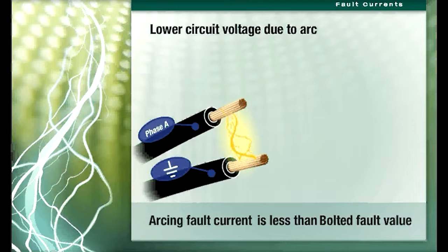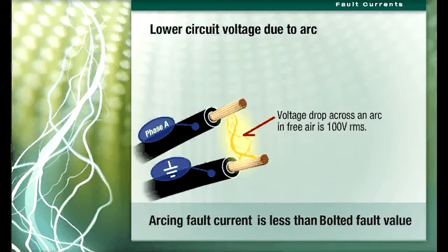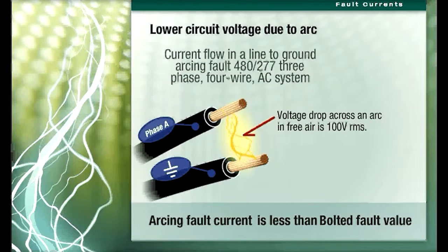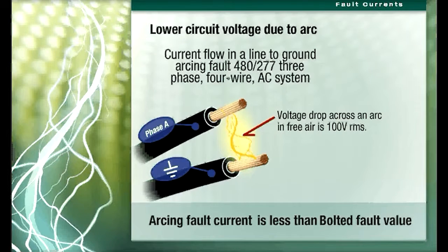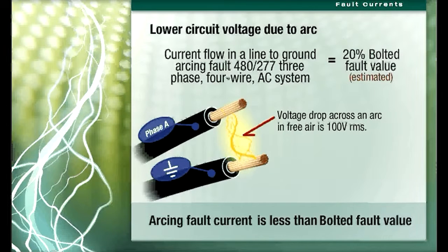The reduction is due to a lower voltage applied to the circuit due to the voltage drop across the arc. The voltage drop across an arc in free air is 100V RMS. Current flow in a line-to-ground arcing fault in a 480/277 three-phase four-wire AC system is estimated to be 20% of the bolted fault value.